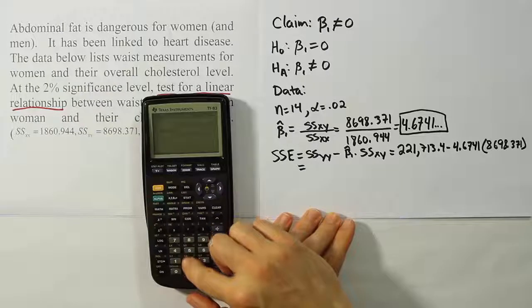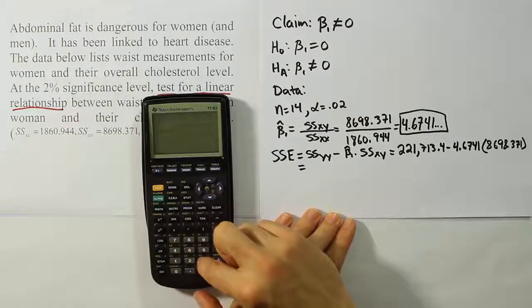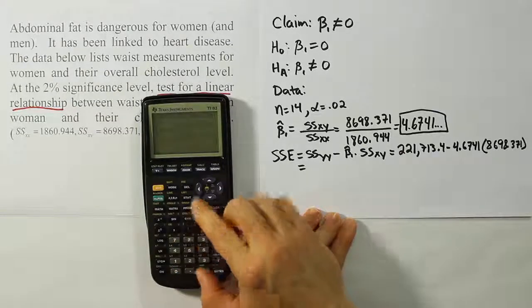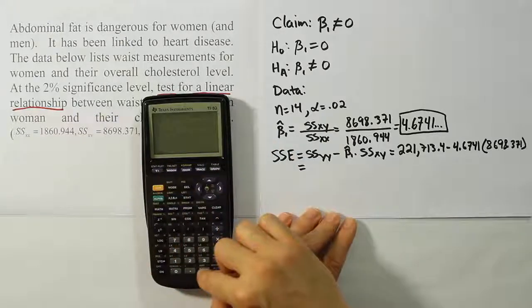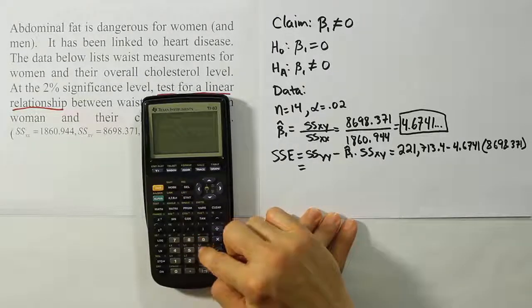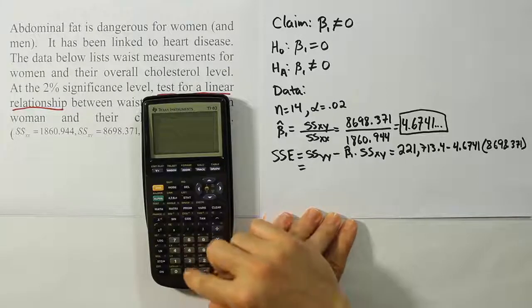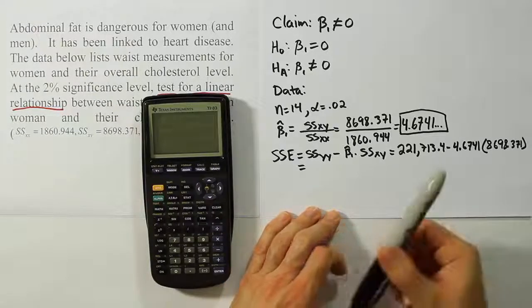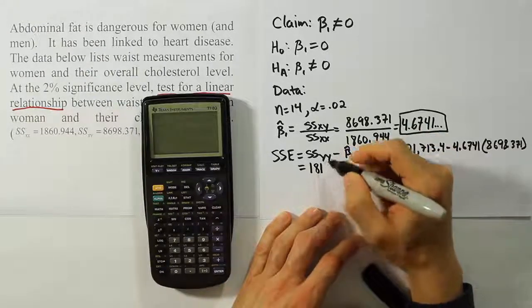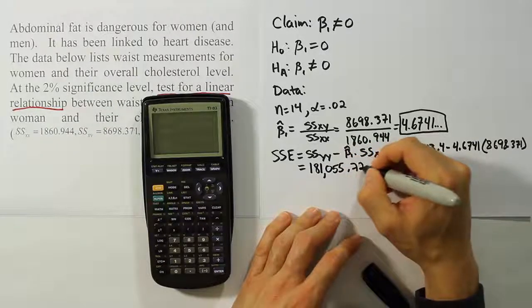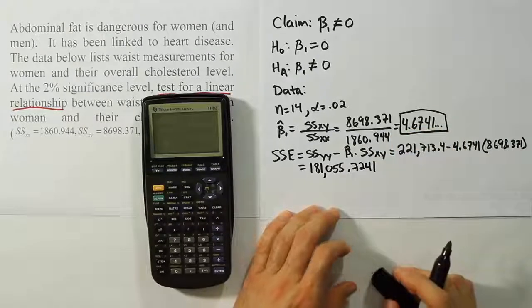So we have 221,713.4 minus the slope, we actually still have the slope in our calculator, so I'm just going to hit second answer there. So minus that answer times 8,698.371. After doing all that, we get this very large number. We get 181,055.7241. So quite a large sum of square for error.